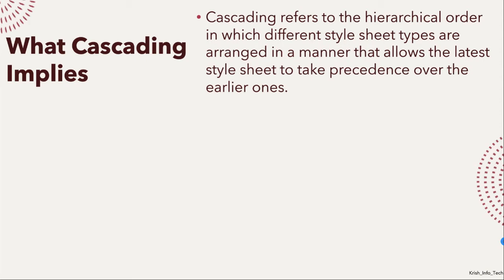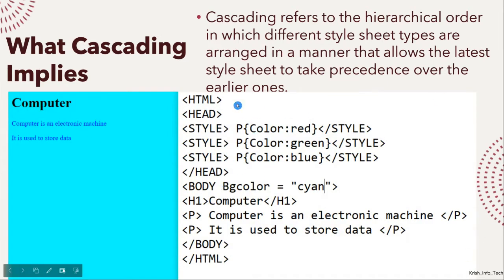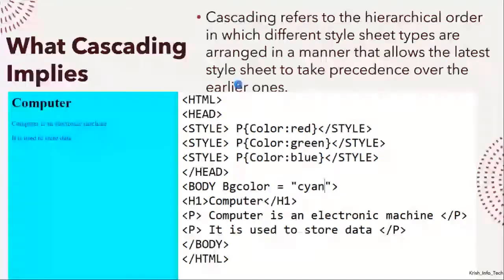Here you can see the program and its output. For this paragraph tag I have used three different cascading style sheet styles. I have given red, green, and blue backgrounds for the paragraph. Though I gave different colors, if you check the output you can see it is coming only in blue color, which is listed last. So it allows the latest style sheet to take precedence — whichever is latest will be applied.